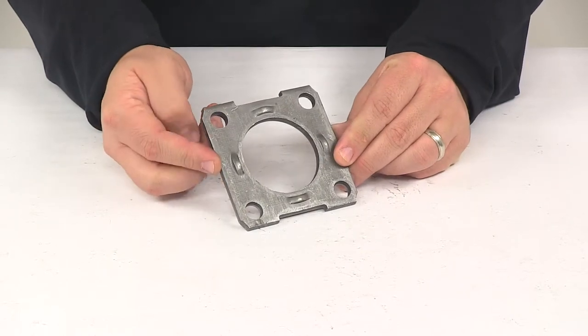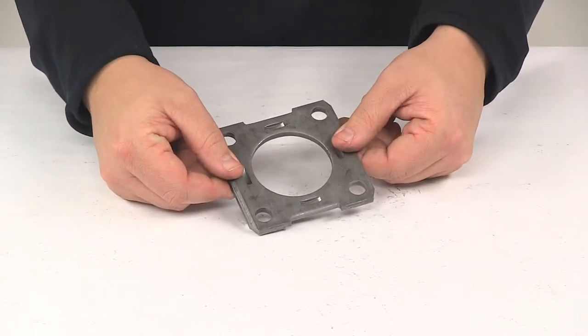This part number includes one brake mounting flange. It's for use with a 10 inch brake assembly.